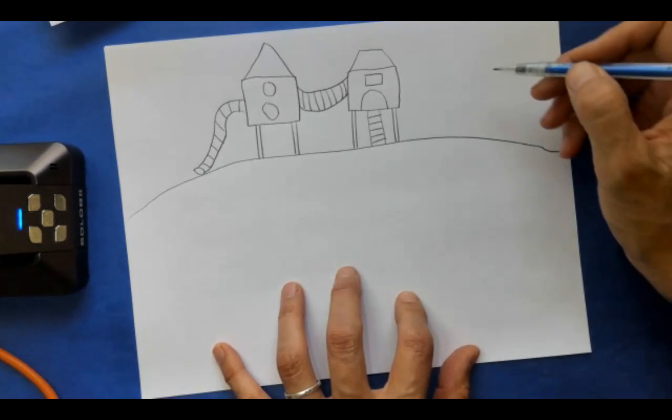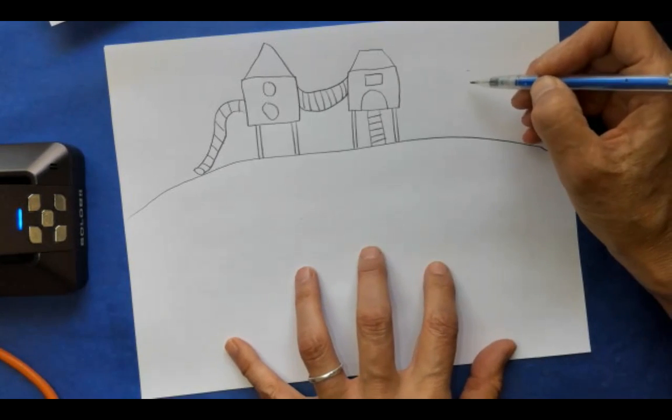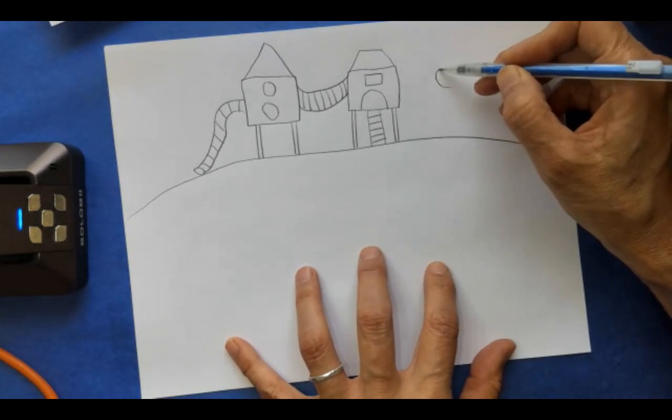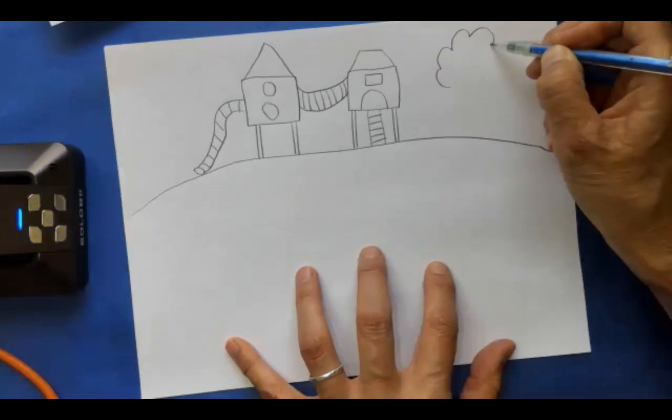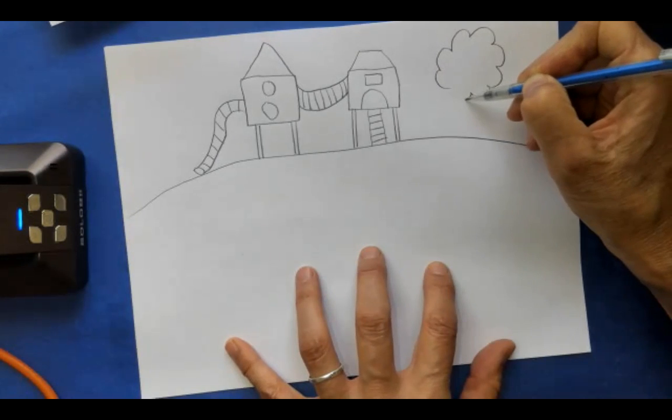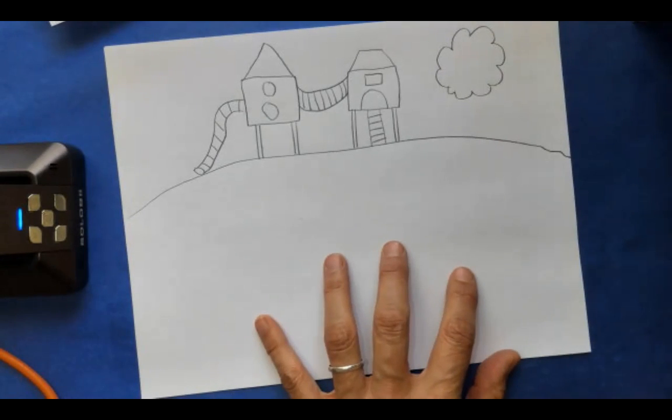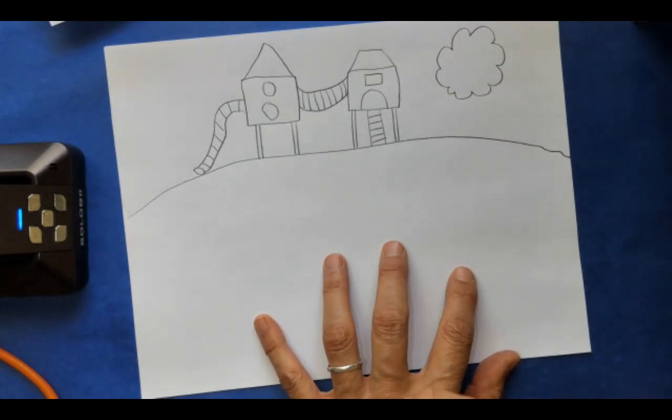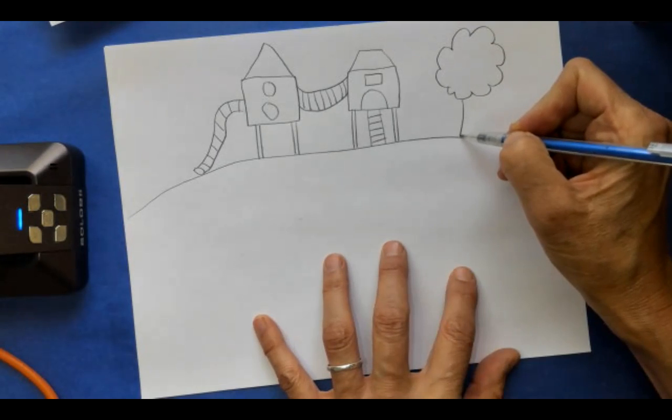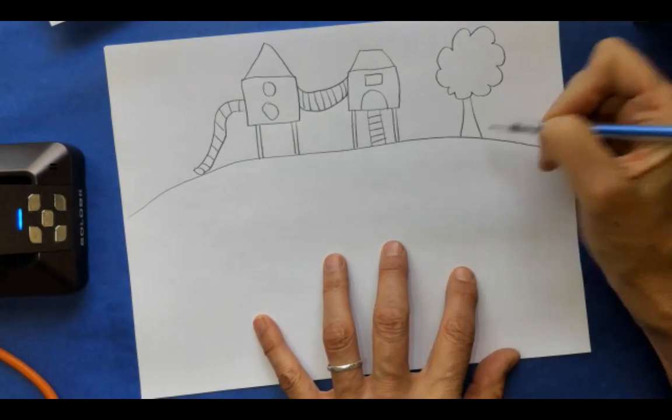I think it'd be nice to have a tree next to our play structure. Trees are very easy. We can just make a big puffy shape. Or a circle if you want. I'm going to make a tree. And then we're going to just draw two lines coming down for a trunk. That was easy. Easy breezy lemon squeezy.